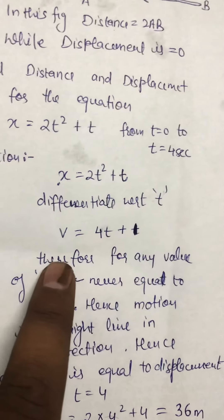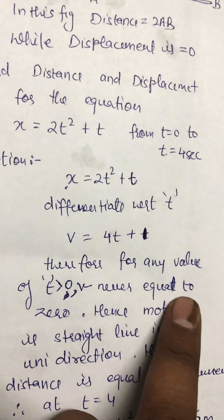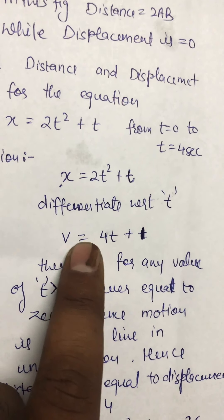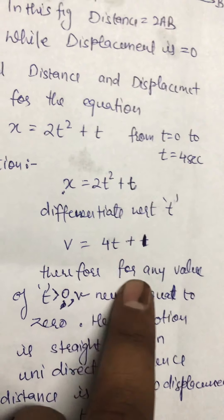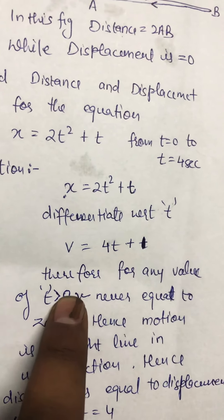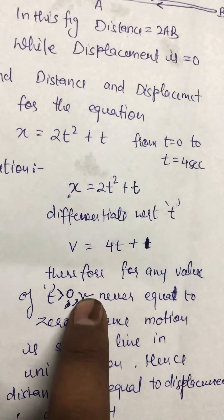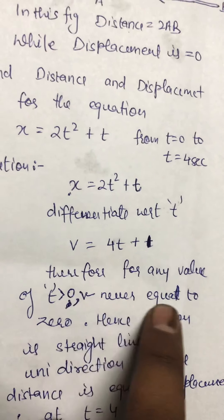It means that if we increase the value of time, the value of v never equals zero. That is, for any value of t greater than 0, velocity never equals zero.